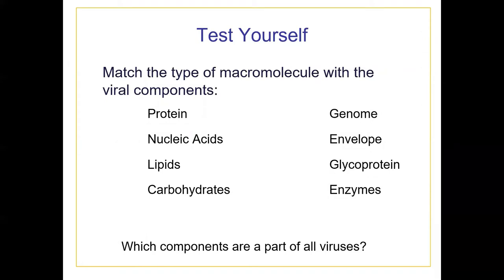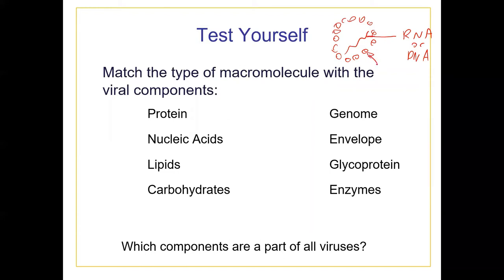Quick review question, then we'll talk about COVID-19. Going back to the different components of a virus - I drew a picture of a virus with a little genome. The genome is going to be RNA or DNA; it can be double-stranded or single-stranded of either. And then it's got this coat - the protein coat is called the capsid.